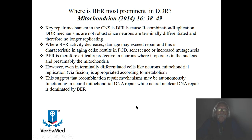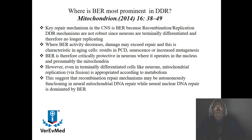Now let's get to a more important question. We know there are multiple types of DDR — DNA damage repair. I just went through the simplest one: base excision repair. We can ask: where is BER most prominent when you're doing DDR? A paper in the journal Mitochondrion from 2014 found that the key repair mechanism in the central nervous system is BER. Why? Because recombination and replication DDR mechanisms are not very robust in neurons.